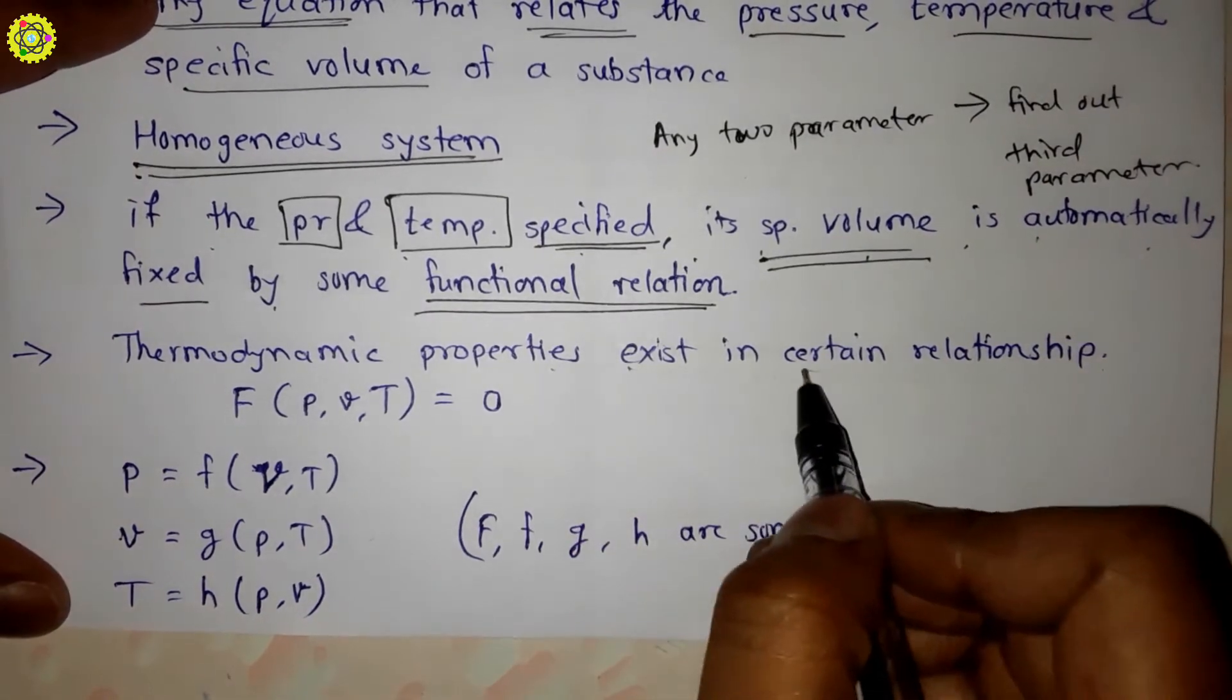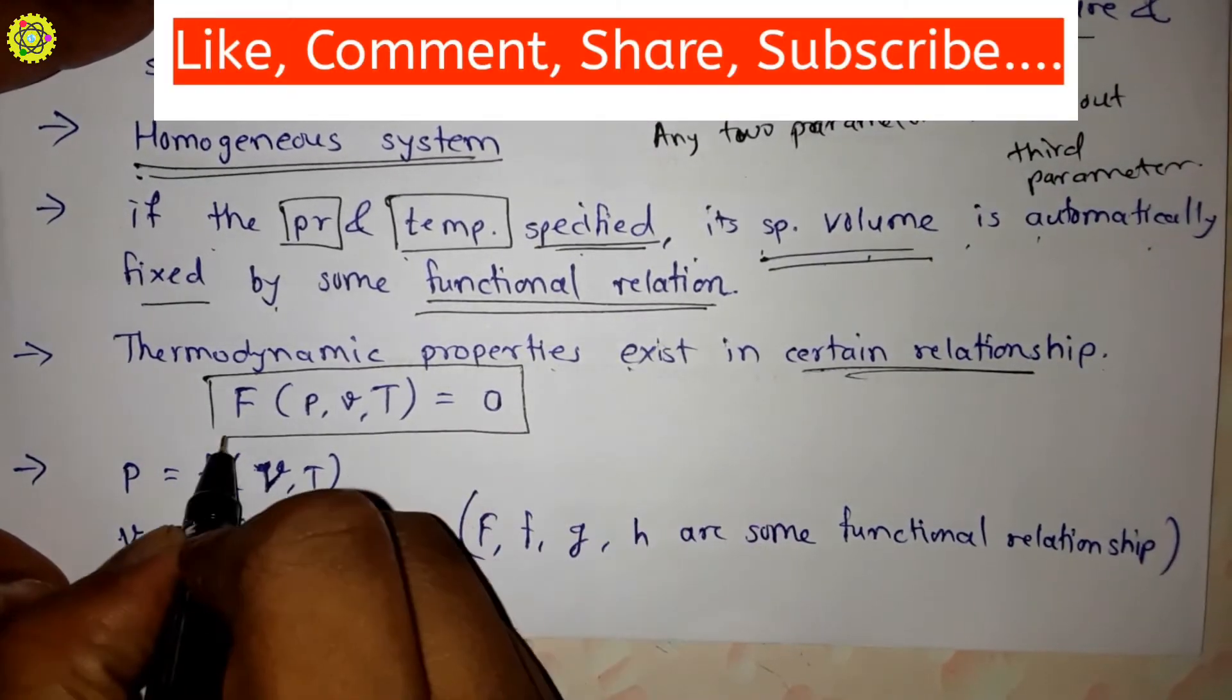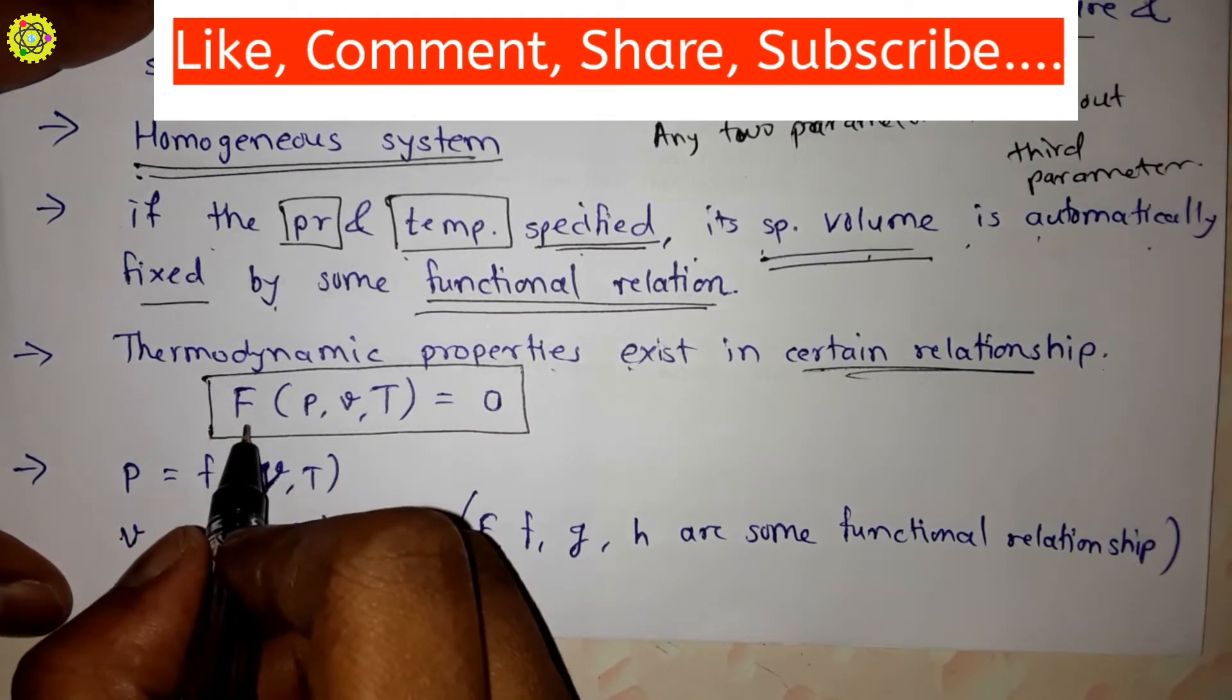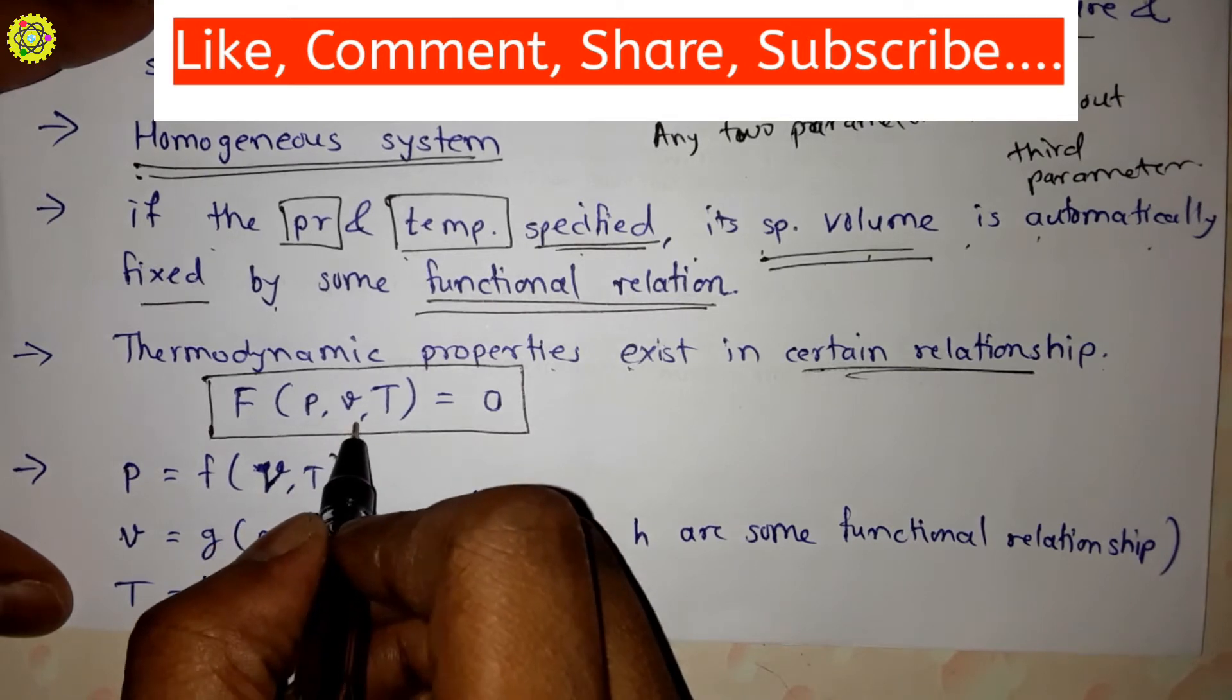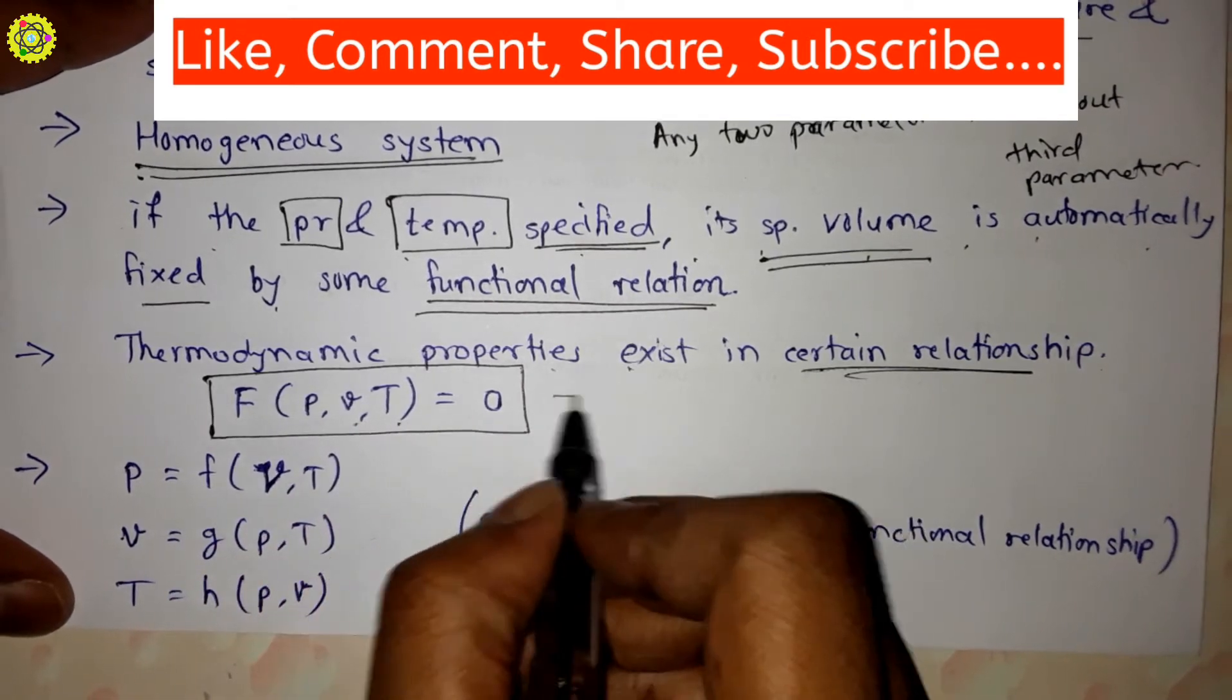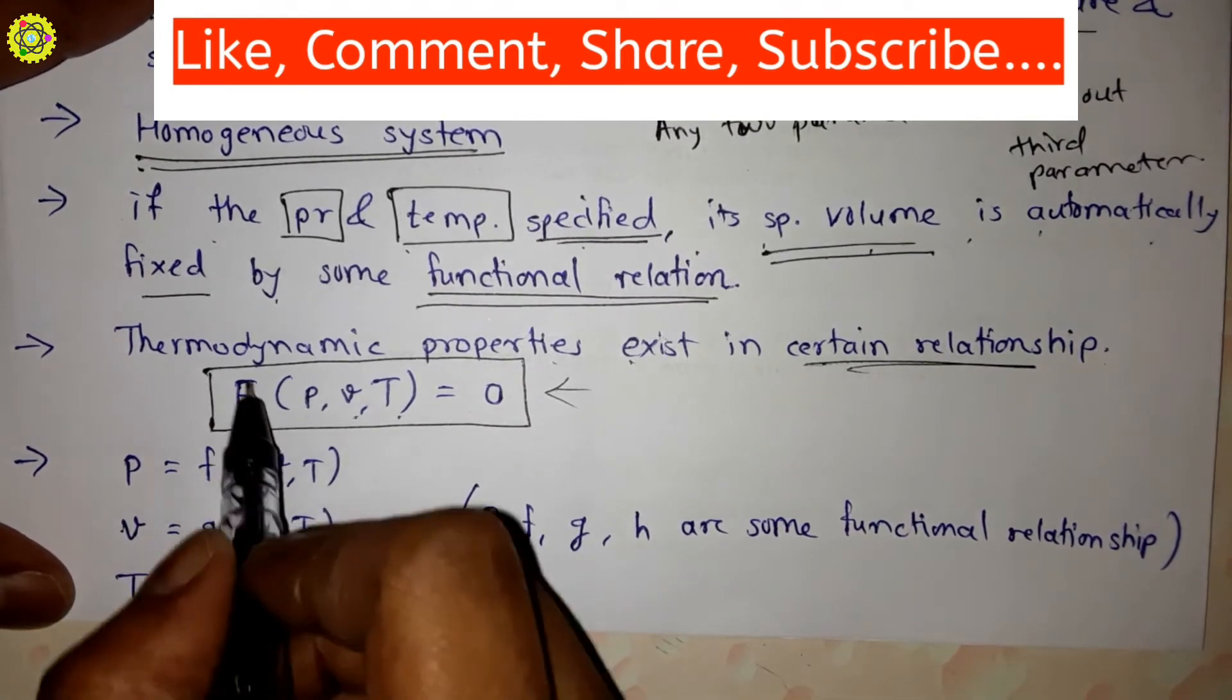Thermodynamic properties exist in certain relationships. One relationship is given as F(p,v,T) = 0, where p is pressure, v is specific volume, and T is temperature. Here F, g, and h are all functional relationships.